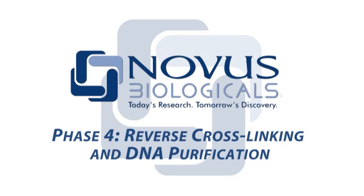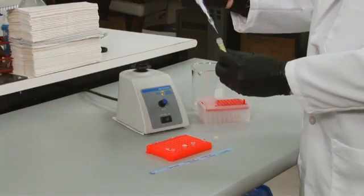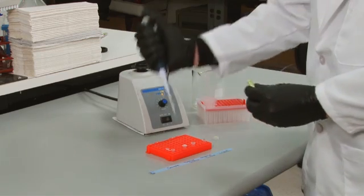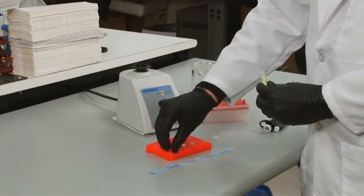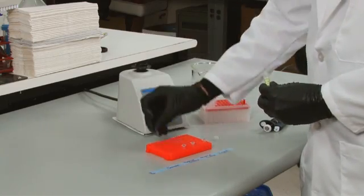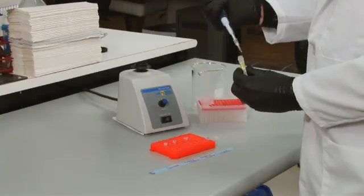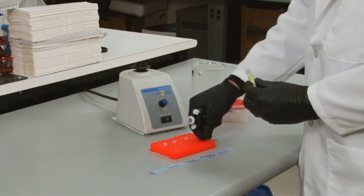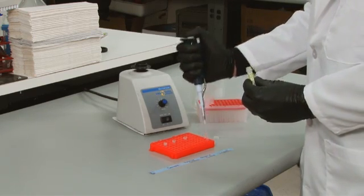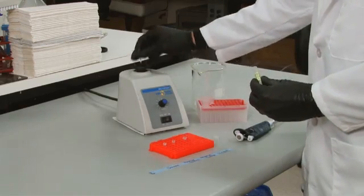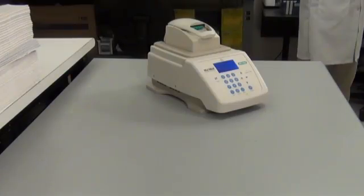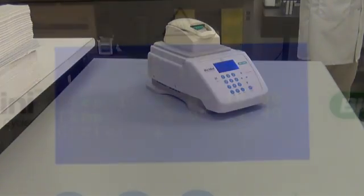In phase 4, we will reverse our initial cross-linking of proteins to DNA, followed by purification of the DNA. Start by taking each IP sample, as well as the input sample which did not go through the preceding IP steps, and add 8 microliters of 5 molar sodium chloride to the 200 microliter samples, followed by vortexing. Incubate at 95 degrees Celsius for 15 minutes.